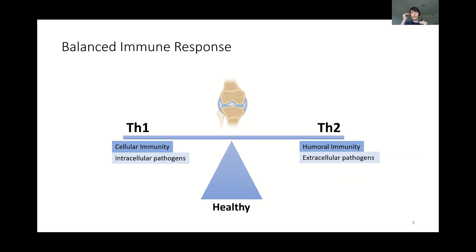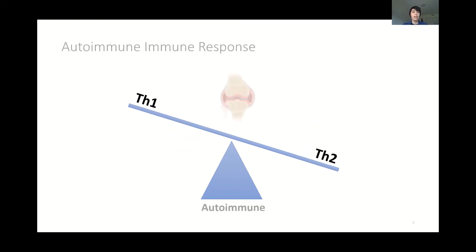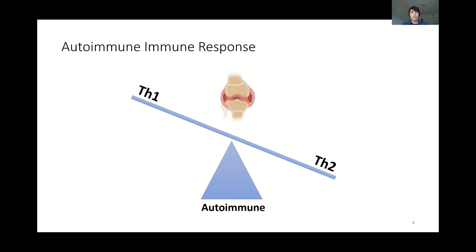When Th1 and Th2 are in balance, your body is healthy. But when there is dysregulation of either one, you run into problems. In the case of the majority of autoimmune responses, including rheumatoid arthritis, Th1 is super-reactive, causing your body to think that your own tissue is a pathogen, so it starts attacking your joints, which causes all of the symptoms we see in this disease.